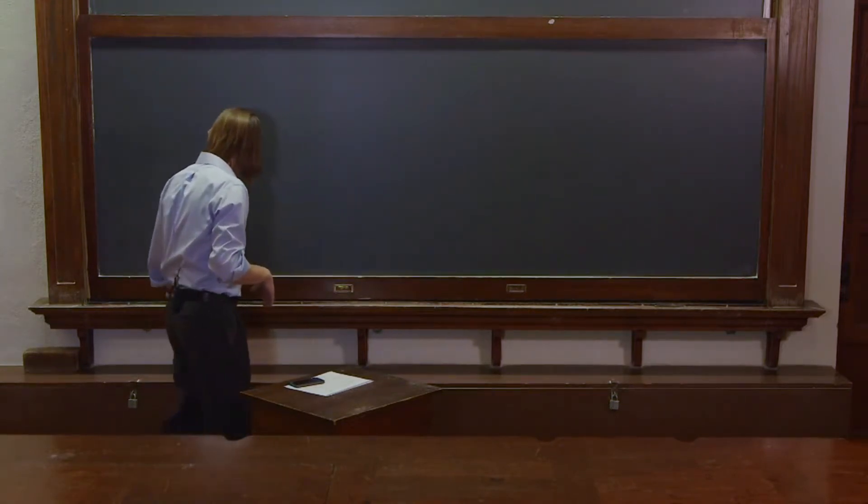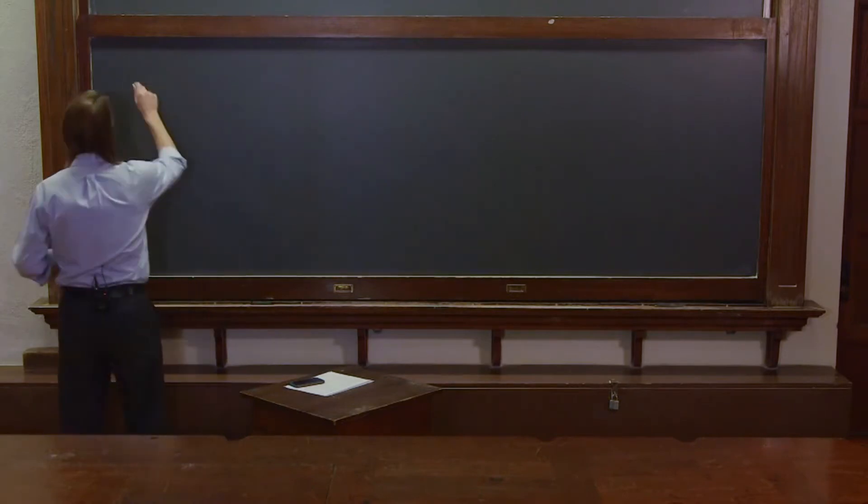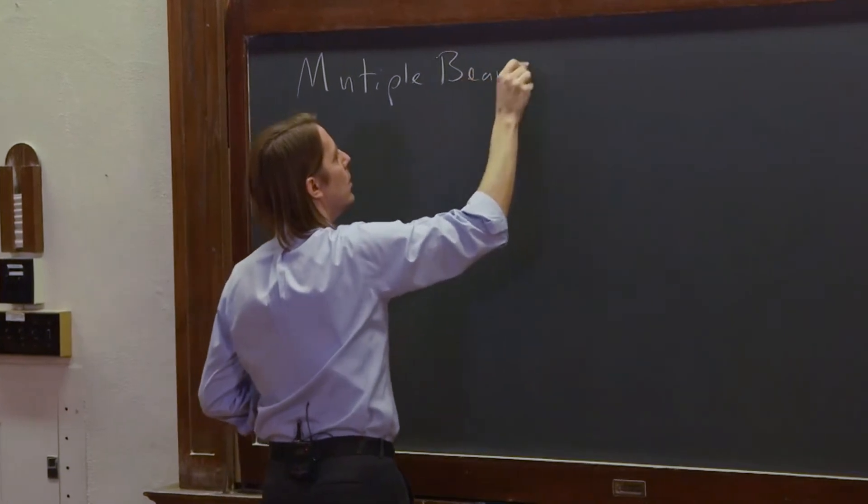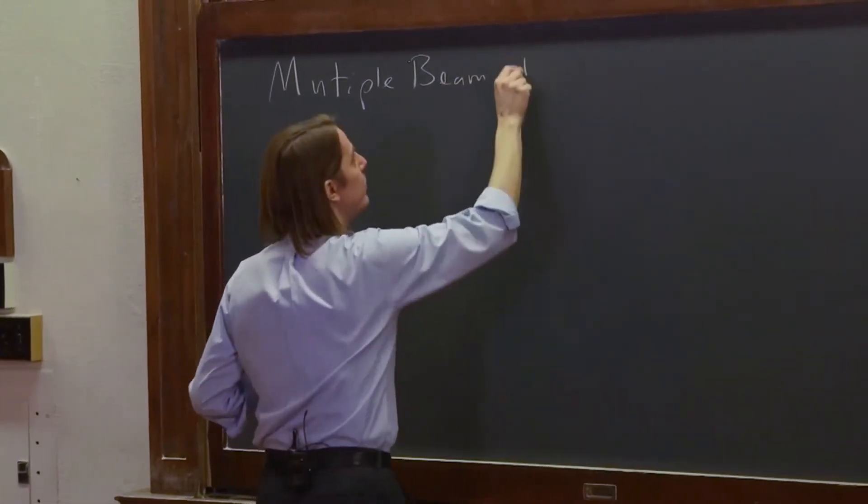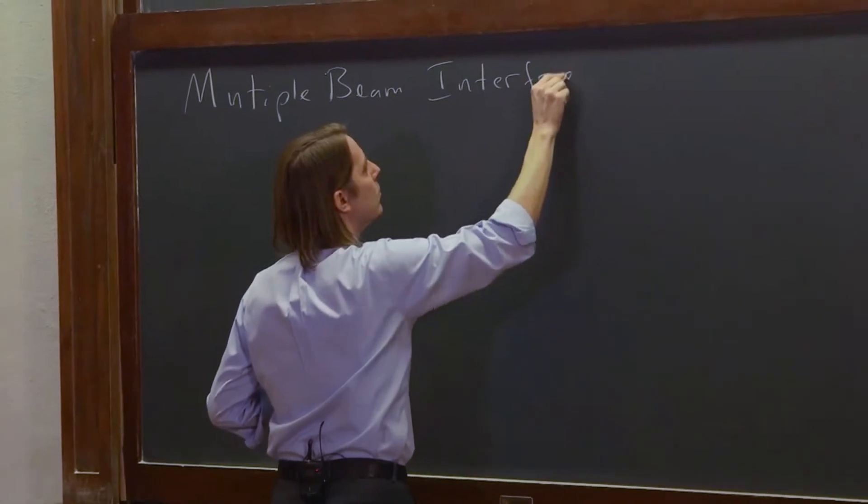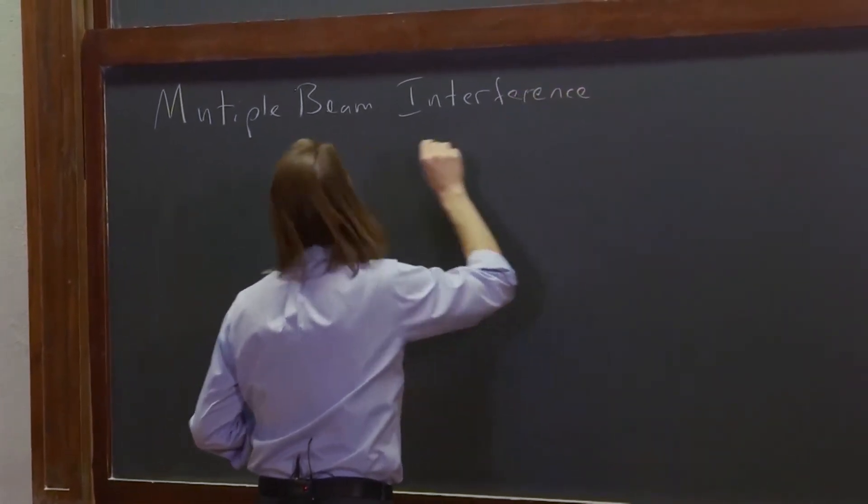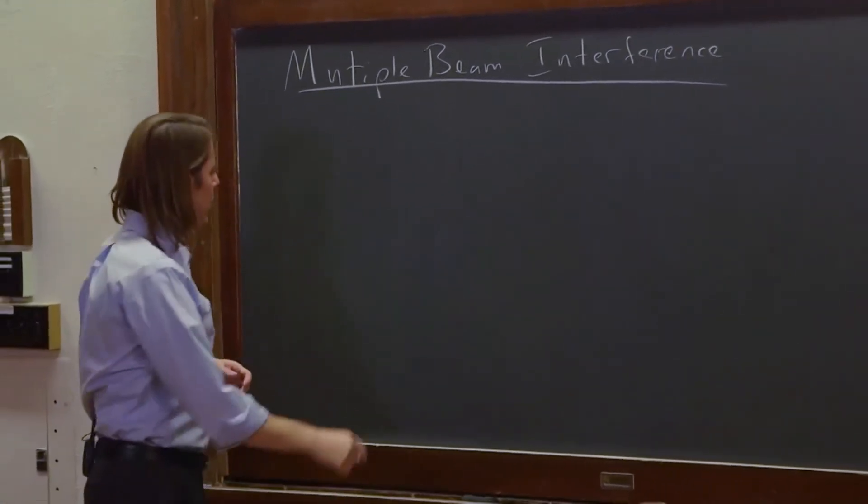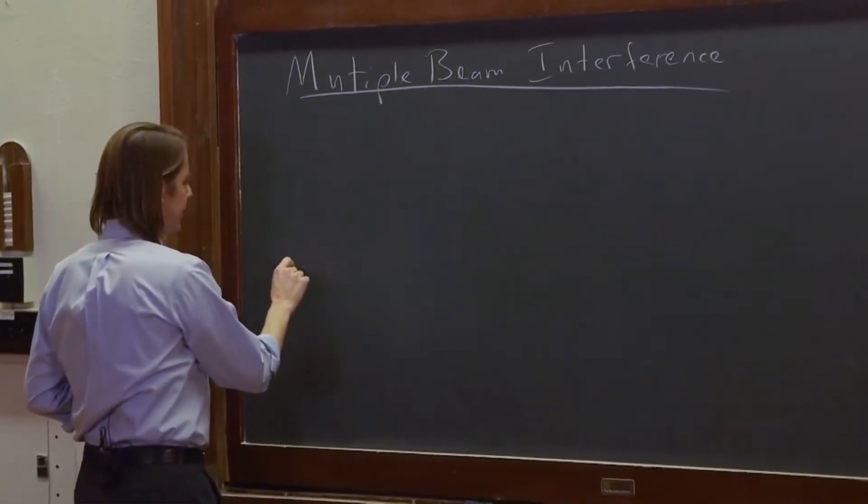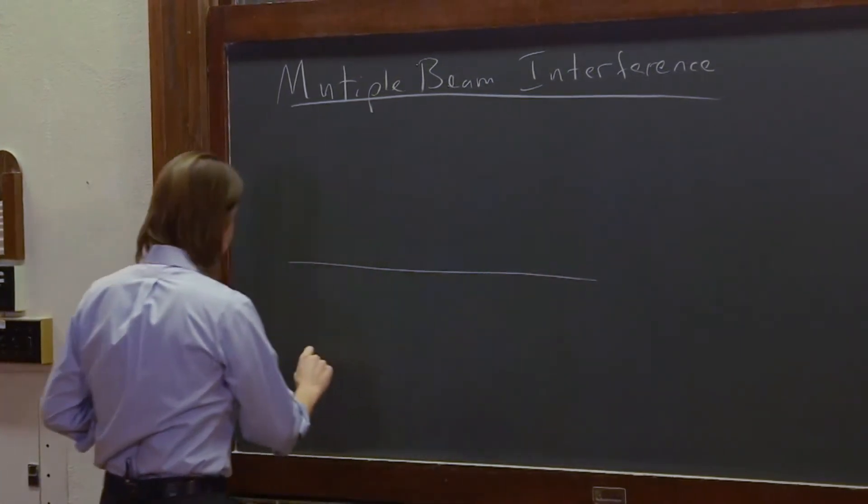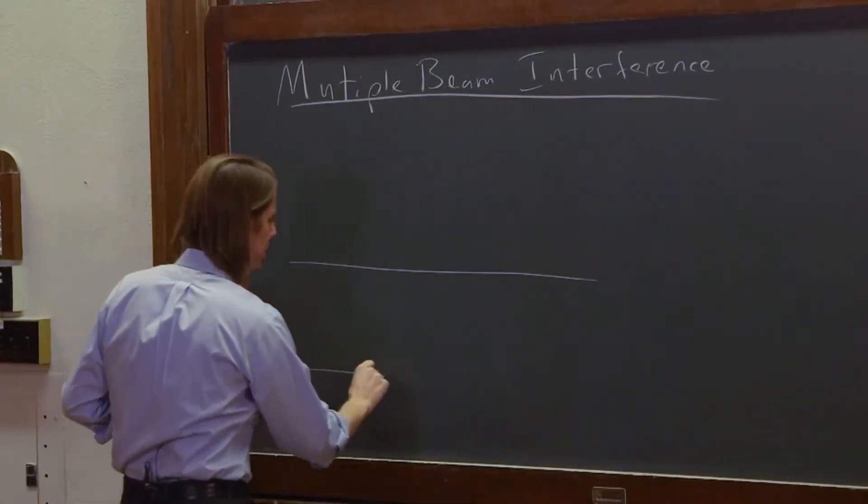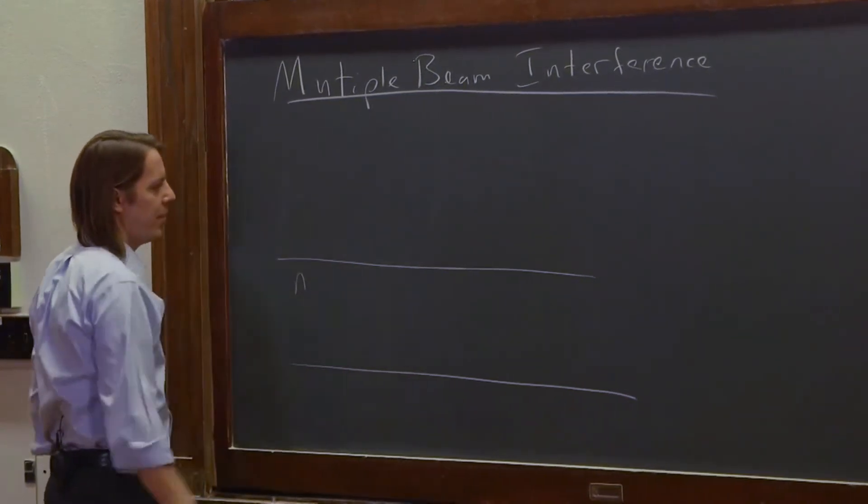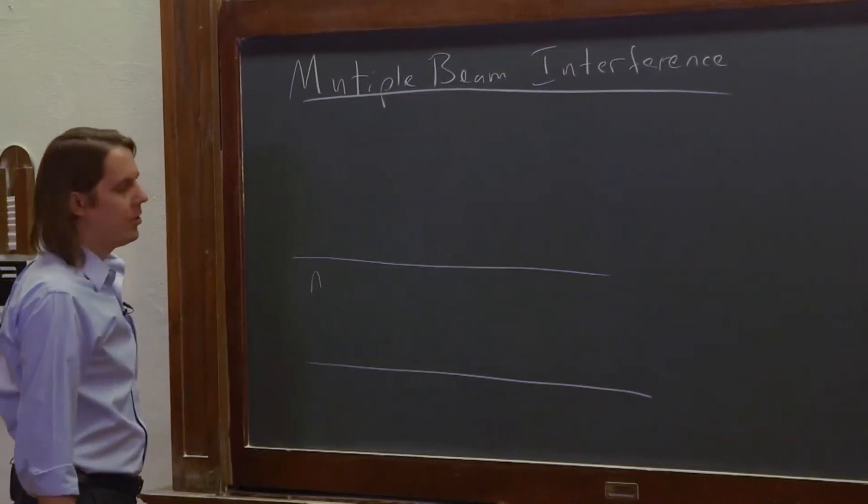Well, it has to do with the subject of this unit, multiple beam interference. Alright. So let's think back to our dielectric film, which as always is glass. It has some index n, and out here we have index of air, say one. And we thought about this before.